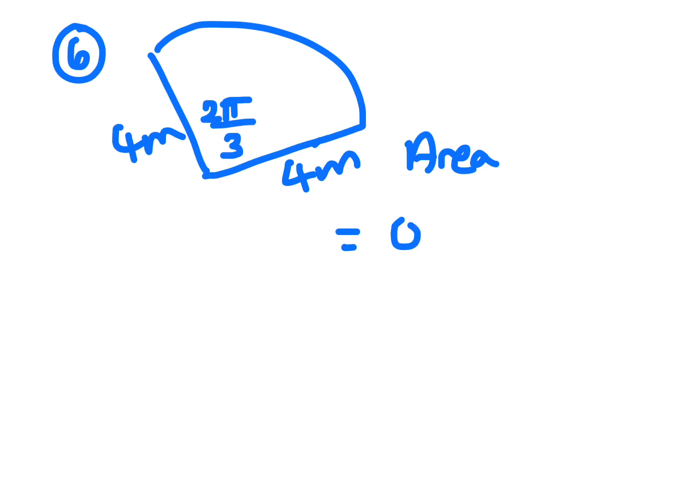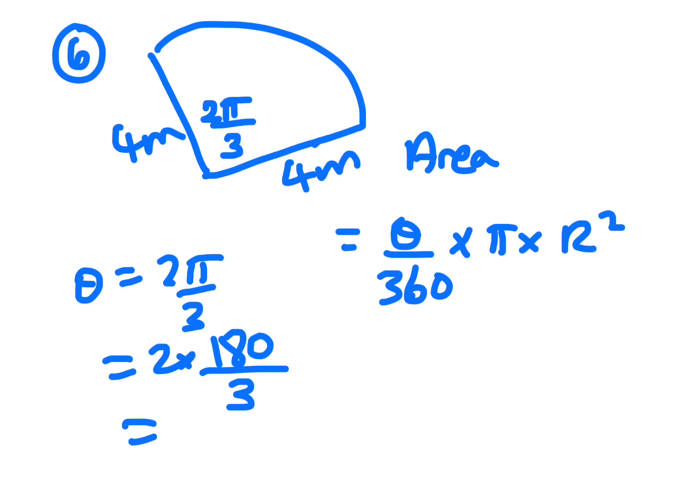To define this area, it's angle on 360, that's if you did it in degrees, times pi times radius squared. So the angle is 2 pi on 3, so we need to change that to degrees. Pi is 180, 180 divided by 3 is 60, two sixties are 120.